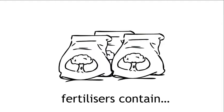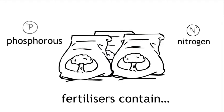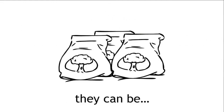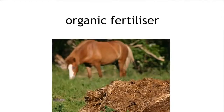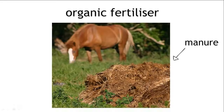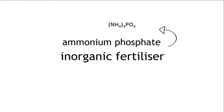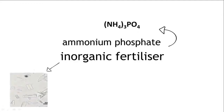Most fertilisers contain nitrogen and phosphorus, though some contain other useful elements like potassium. They can be organic or inorganic. Organic fertiliser contains carbon, and an example of an organic fertiliser is manure. Inorganic fertilisers can take many forms, such as ammonium phosphate, which can be in a crystal or a powdered form.